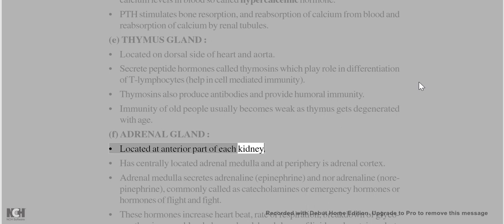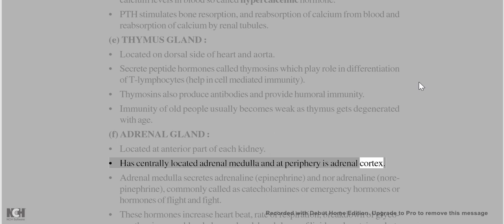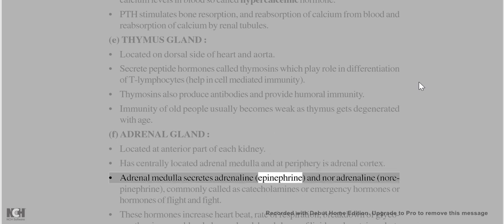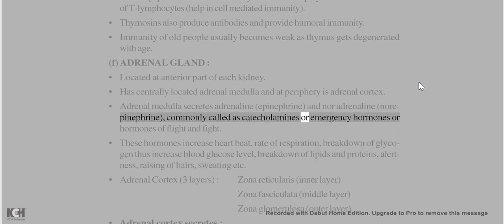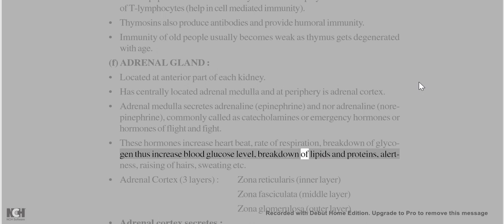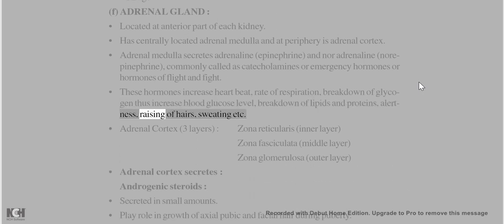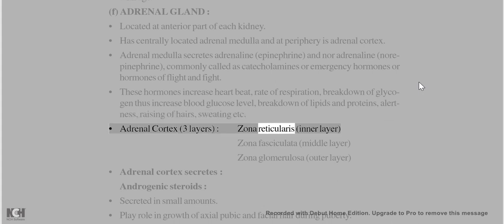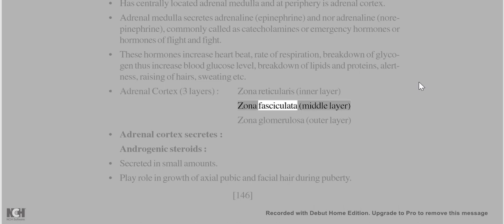Adrenal gland is located at the anterior part of each kidney. It has a centrally located adrenal medulla and a peripheral adrenal cortex. Adrenal medulla secretes adrenaline (epinephrine) and noradrenaline (norepinephrine), commonly called catecholamines or emergency hormones or 'fight or flight' hormones. These hormones increase heartbeat, rate of respiration, breakdown of glycogen (raising blood glucose), breakdown of lipids and proteins, alertness, raising of hairs, and sweating.